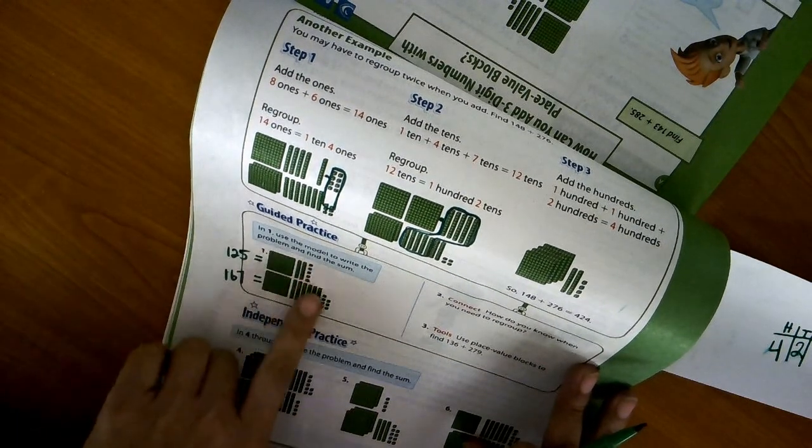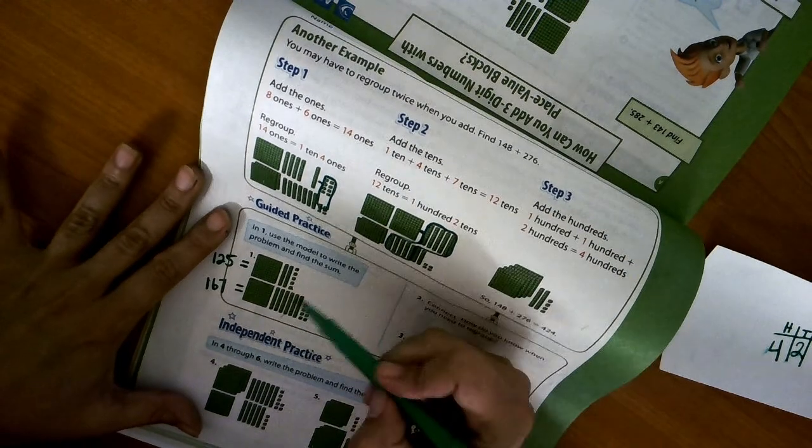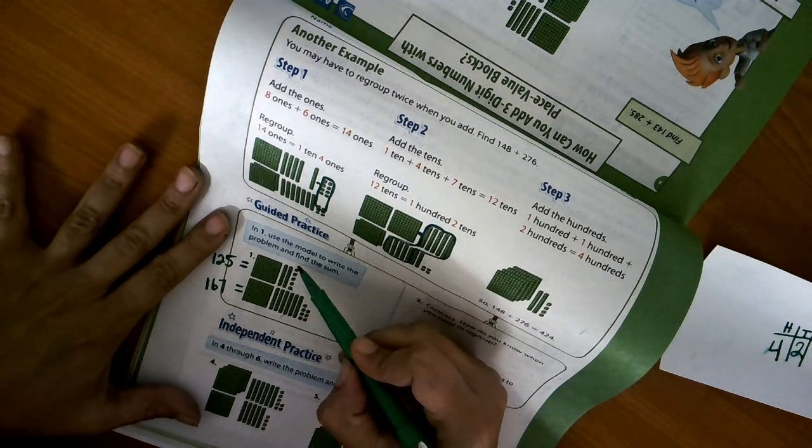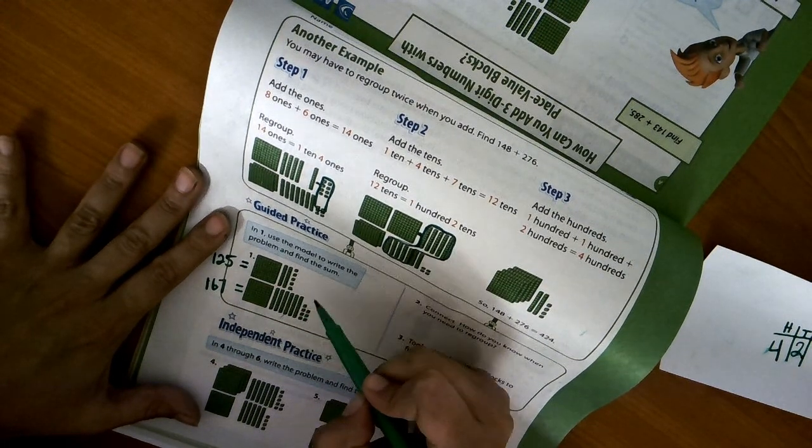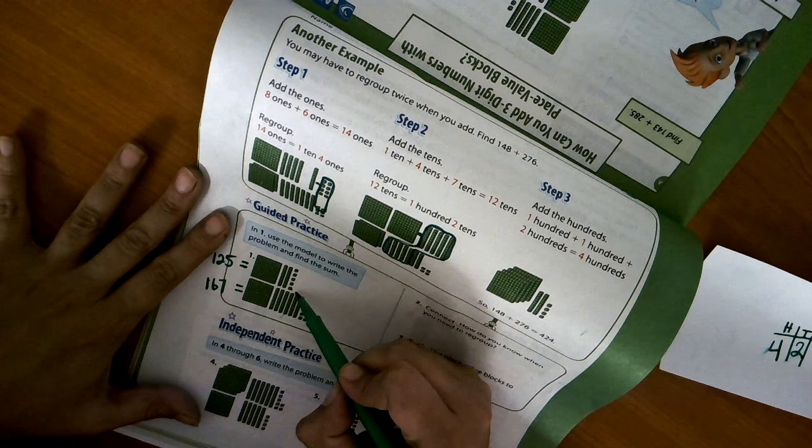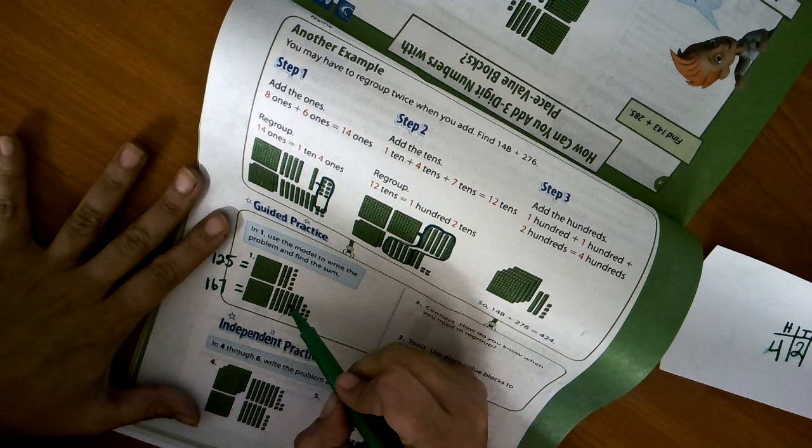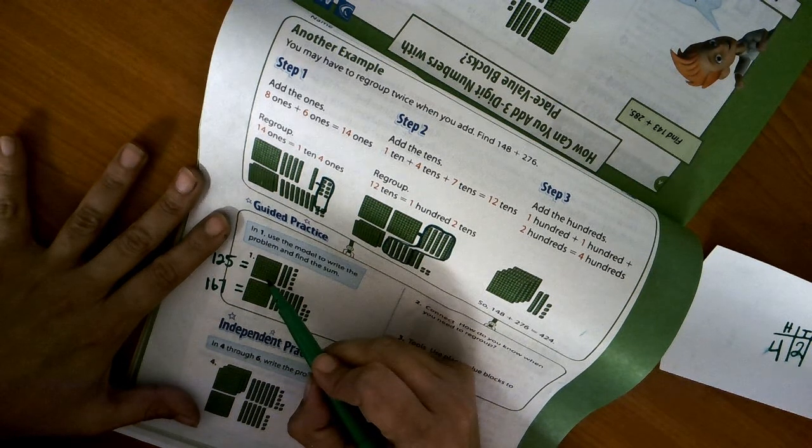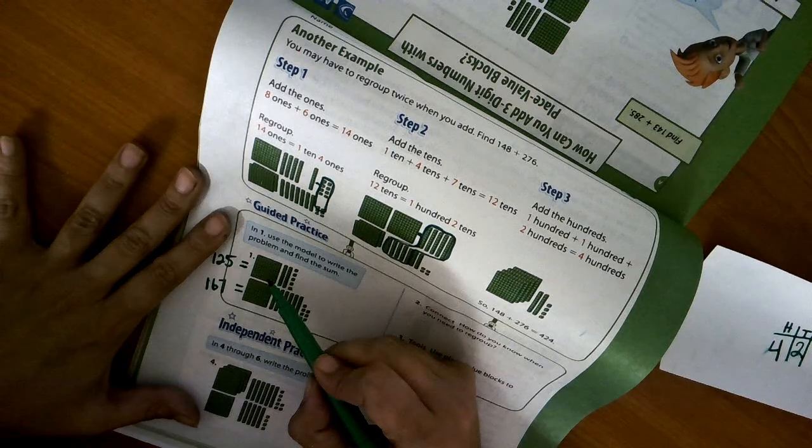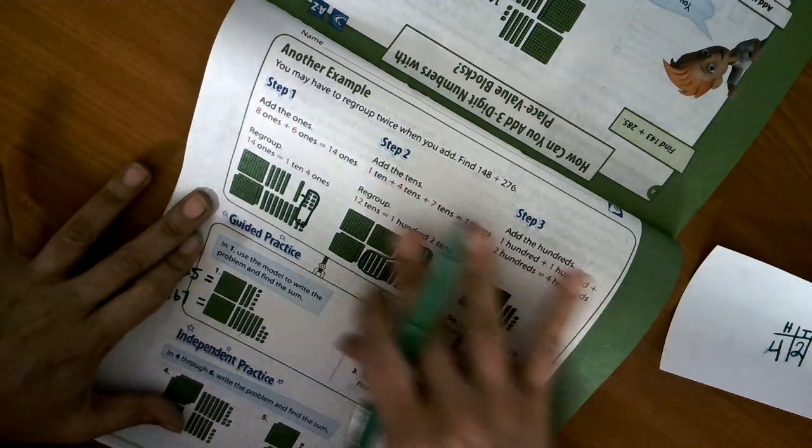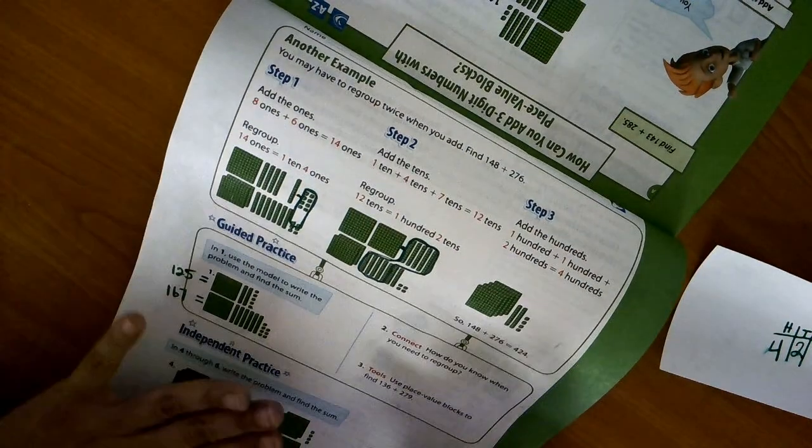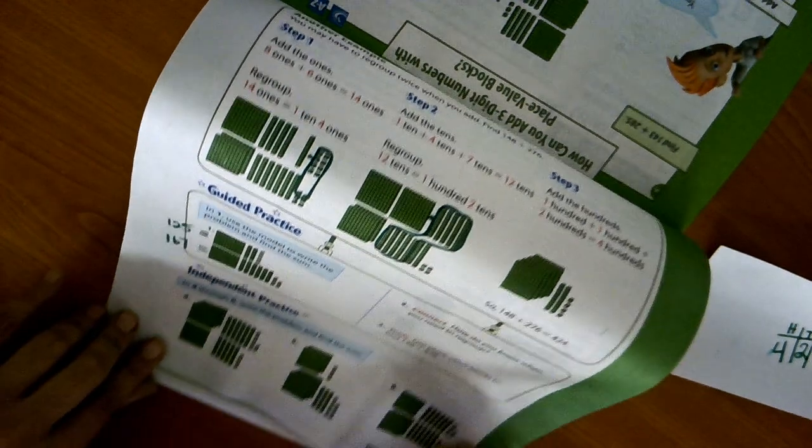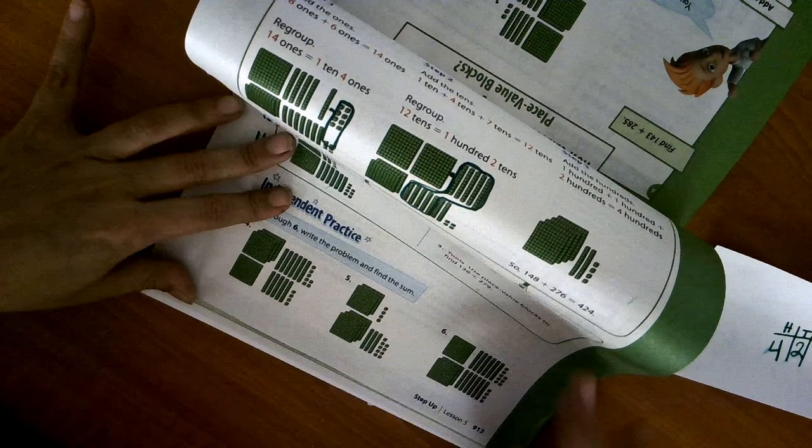And then show your work and your models. So add your ones first. If you have 10 or more, circle them and regroup it to the tens place value. Then add your tens. If you have more than 10 tens, circle it and add it to your hundreds place value. Follow these steps. If you follow these steps, you will get these correct. That is what I would do for these numbers right here, 4 through 6. Put your numbers next to the side and then show your work.